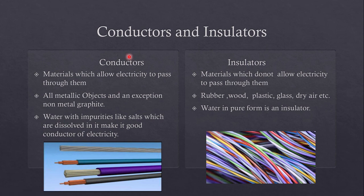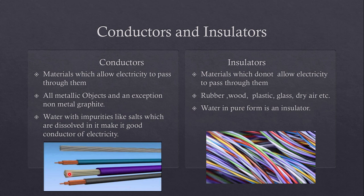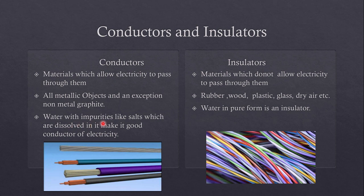The next topic is conductors and insulators. What are conductors? Materials which allow electricity to pass through them are known as conductors. These are metal wires like copper wire and aluminium wire — these are conductors through which electricity can be passed. All metallic objects are good conductors of electricity. The only exception among non-metals is graphite — graphite is a non-metal but it is also a good conductor of electricity. Water with impurities, if the water is impure having salts or other impurities dissolved in it, is also a good conductor of electricity.